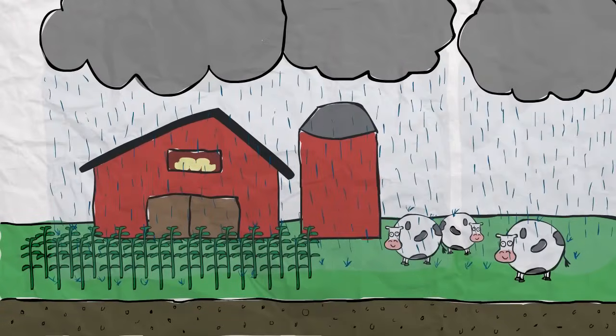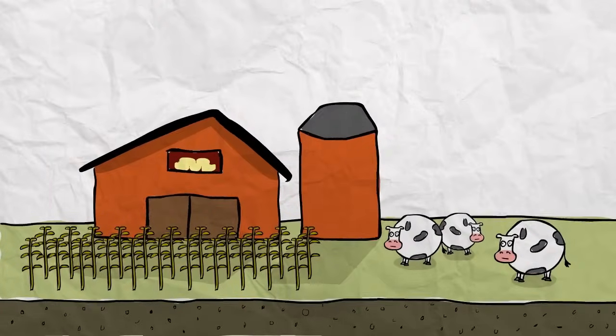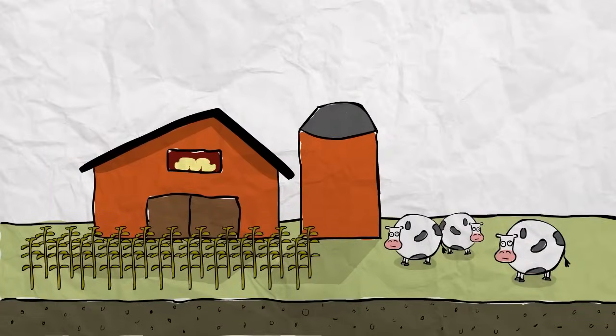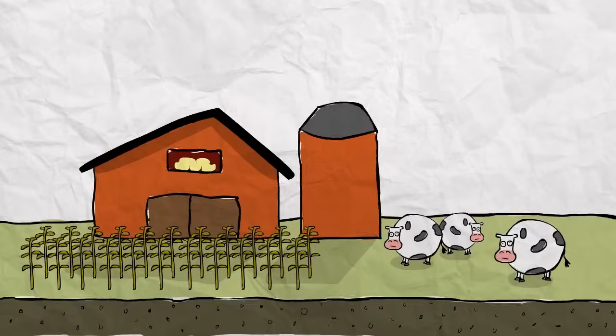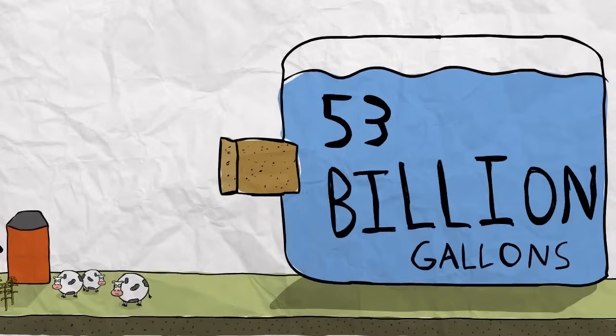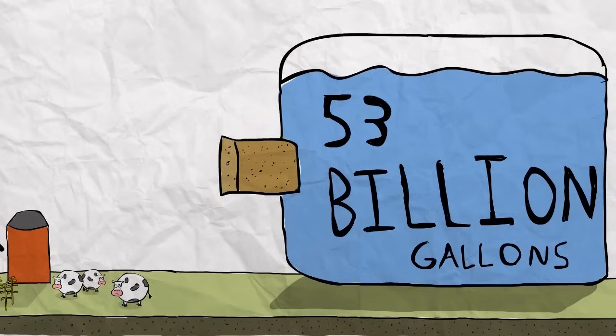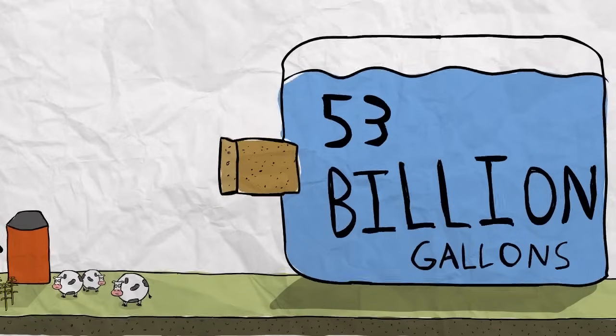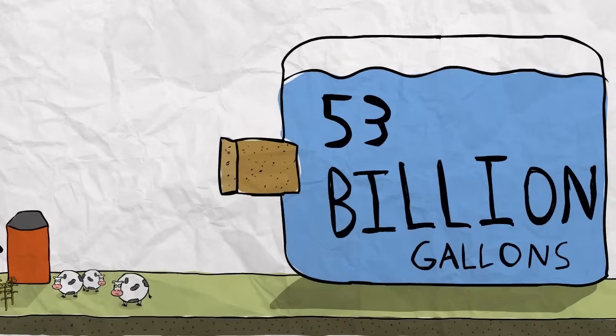Farms can get lots of the water they need from rain, but rain isn't always enough. And in dry years, farmers depend even more on the water that's stored in the ground. In fact, American farms use about 53 billion gallons of groundwater every day. That's enough to fill over a million bathtubs or 80,000 Olympic-sized swimming pools. So, if we're using that much every day, can it run out?